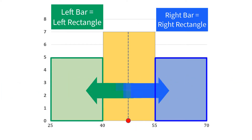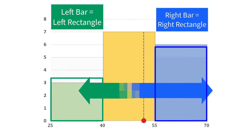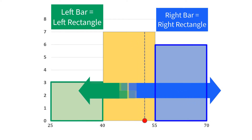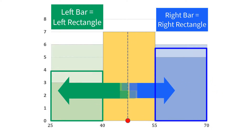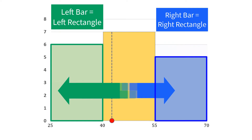If the frequency of the right bar is greater than the left bar, then the vertical line will shift towards the right bar, but it will never cross 55. If the frequency of the left bar is greater than the right bar, then the vertical line will shift towards the left bar, but it will never come below 40.